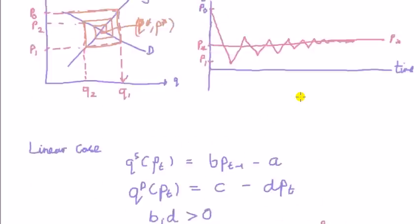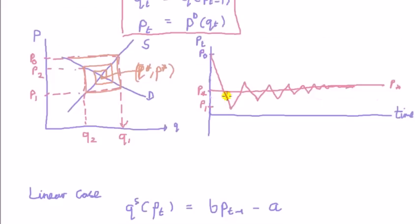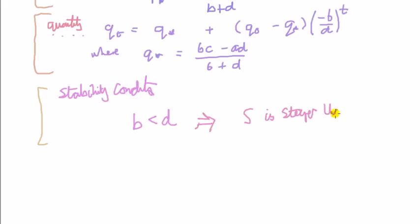If we ignore the negative sign, that the slope of the inverse supply will be steeper than the slope of the inverse demand. In other words, in terms of a picture, this here slope is steeper than this here slope, ignoring the negative sign. In other words, the S line is steeper than this demand set line. Supply set line is steeper than demand set line.